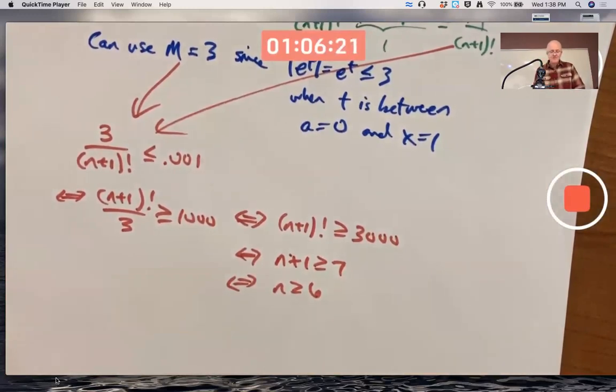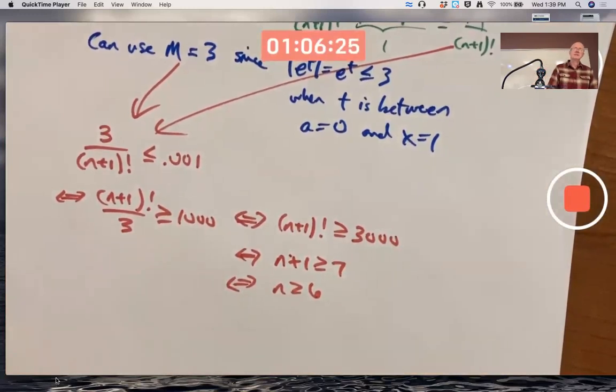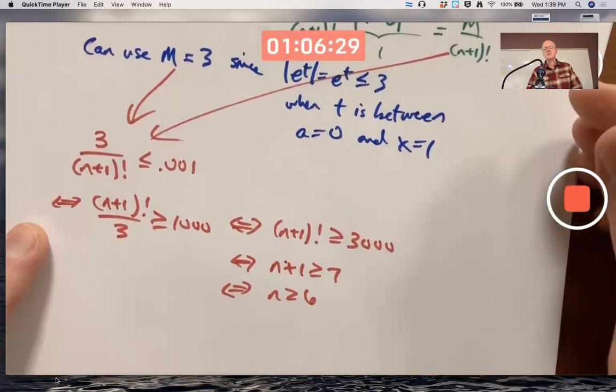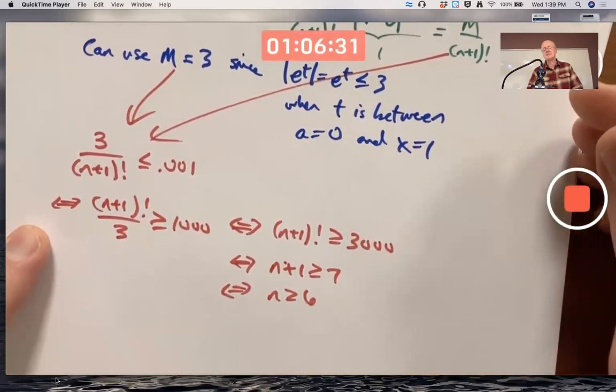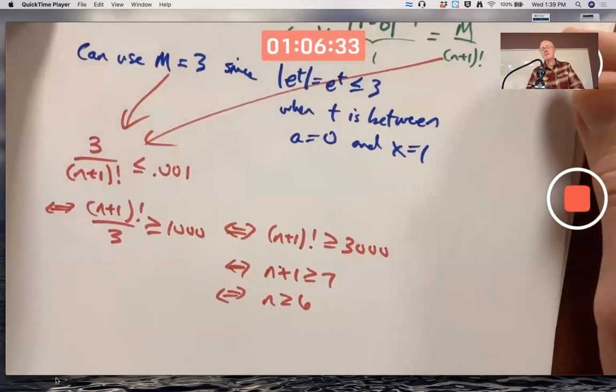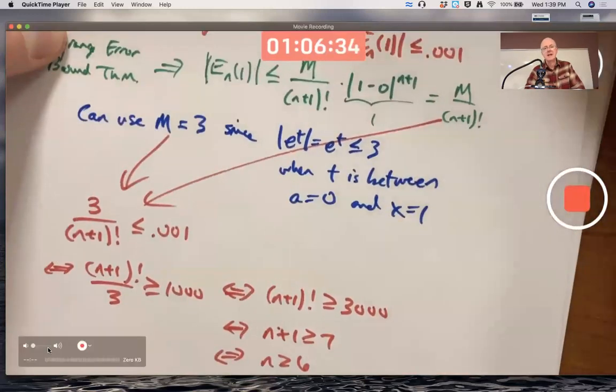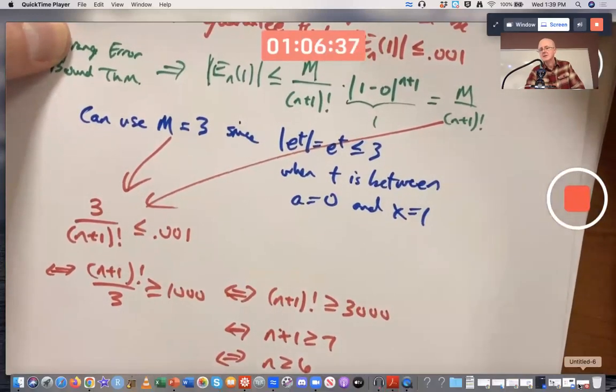So if I use six terms in the series, actually that'd be seven terms because there's the 0th degree term. Seven terms, the highest power of x is 6. I will be within 0.001 of the true answer. Let's see if that happens, and that'll be our last thing to do today.